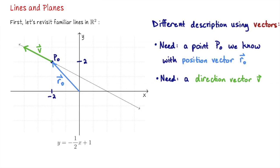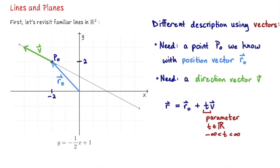That equation is r equals the position vector R₀ plus t times the direction vector v. This coefficient t is what we call a parameter, and the values of t are any real number — t is an element of the set of real numbers, or equivalently t ranges from negative infinity to infinity. Since the right-hand side depends on a choice of t, I will often denote the left-hand side as r of t to show that this is depending on t.